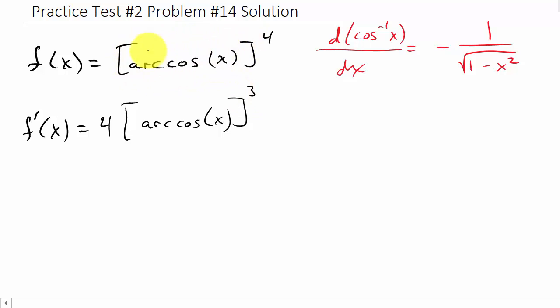So then it's times the derivative of arc cosine x. Well, there's your derivative, so that's going to be times negative 1 over square root of 1 minus x squared.